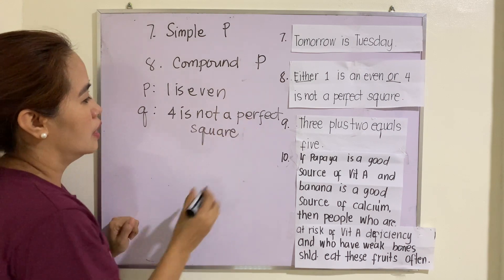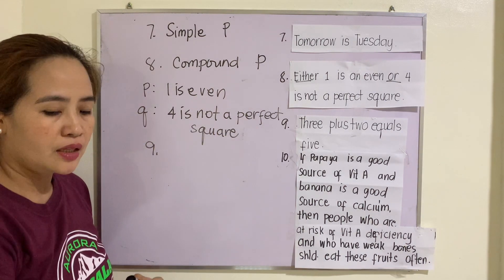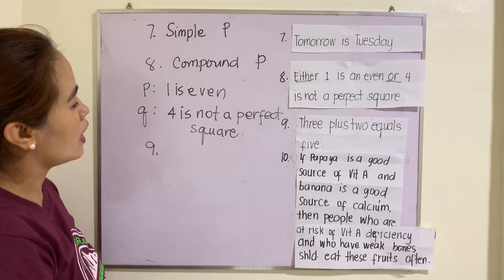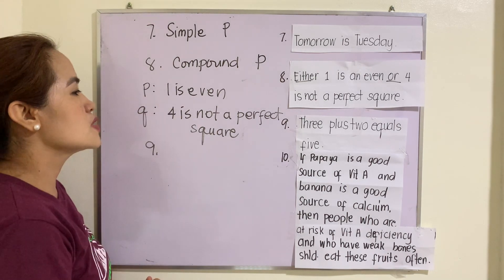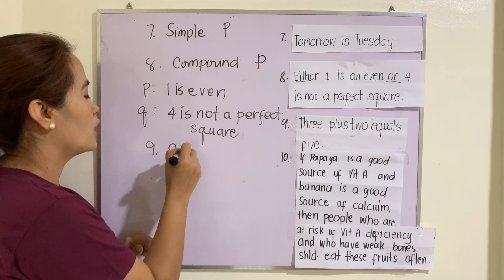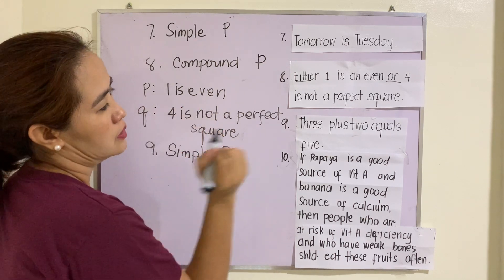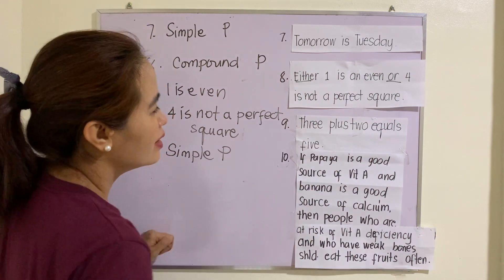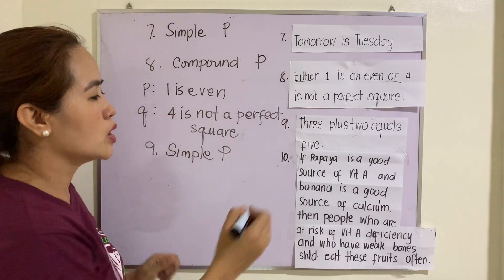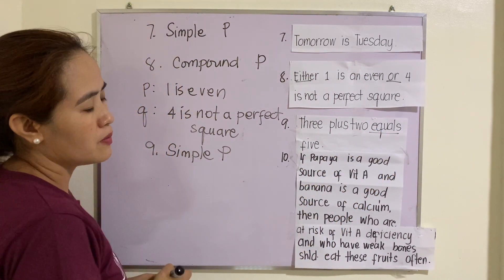Number nine: 'Three plus two equals five.' This one is a simple proposition. The verb here is 'equals', with a simple subject and simple predicate.